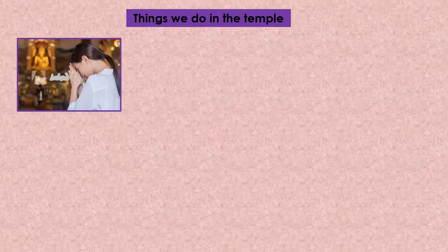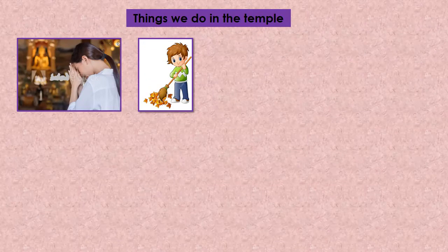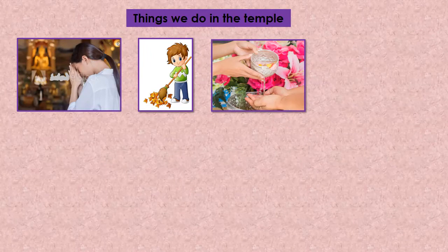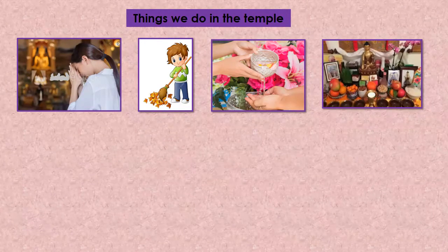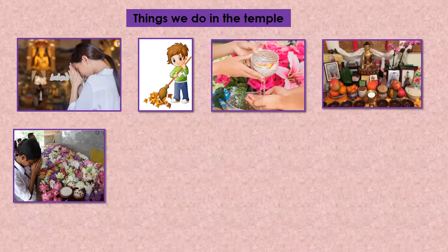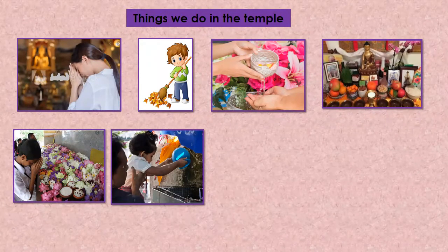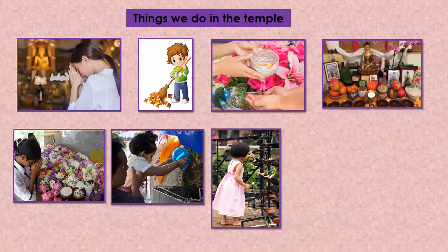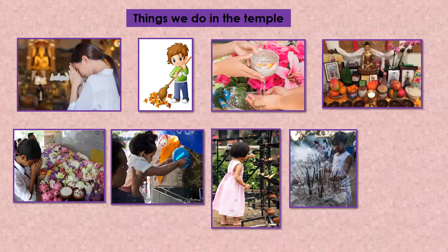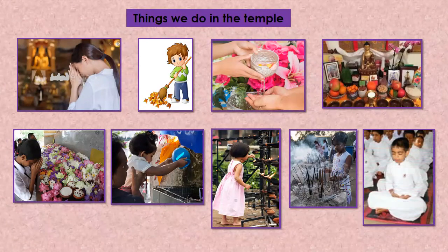The things we do in the temple: collect your arms and bow your head to the Buddha when first entering the temple. Sweep the temple premises. Wash your hands and sprinkle flowers with water. Then you can offer your agil ampasa and offer flowers. Offer water to the Bodhi tree. Then light up oil lamps, offer incense sticks, worship, and also you can meditate in the temple.